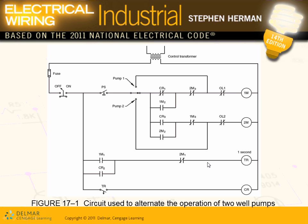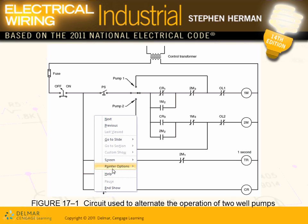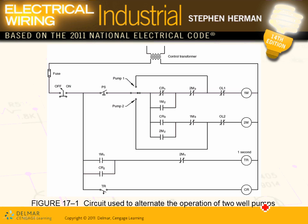I want to bring to your attention the inputs we have here. We have input one, input two, a third input, a fourth input, and a fifth input — these are all inputs coming to the PLCs. The outputs are here and here — these are my two outputs.